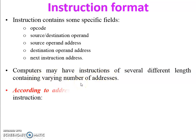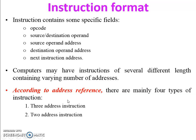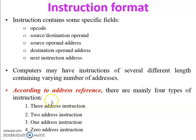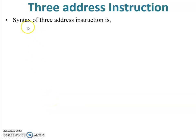Computers may have instructions of several different lengths containing a varying number of addresses. According to address reference, there are mainly four types of instruction: three address instruction, two address instruction, one address instruction, and zero address instruction. Now let's see each one in detail.